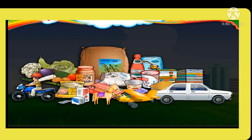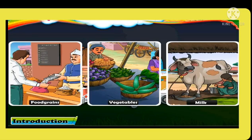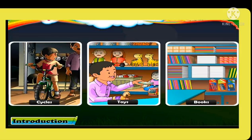Have you ever wondered where we get our daily necessities? Food grains, milk and vegetables come from the villages, whereas cycles, toys and books come from the cities.